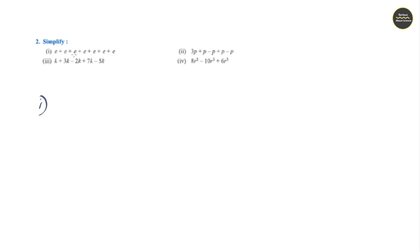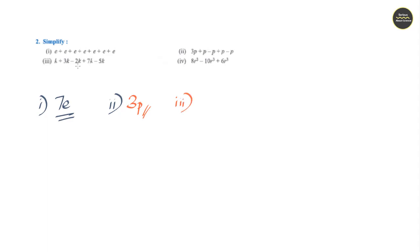Section 2, Question 1: Count how many e's there are — one, two, three, four, five, six, seven. Adding 7e together gives the answer 7e. Question 2: plus b and minus b cancel each other out, same for the other plus b and minus b, so the remaining term is only 3p. Answer is 3p.